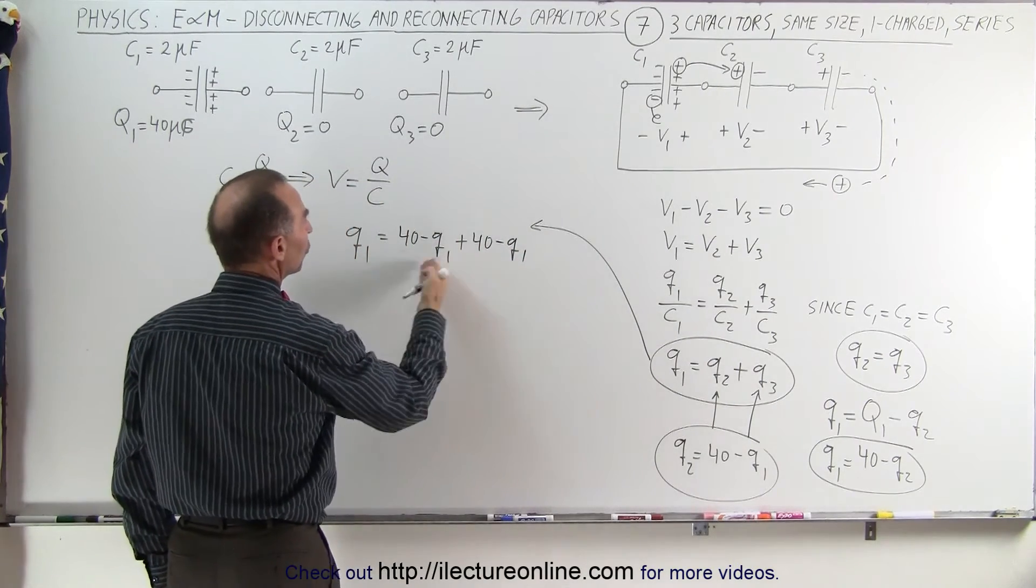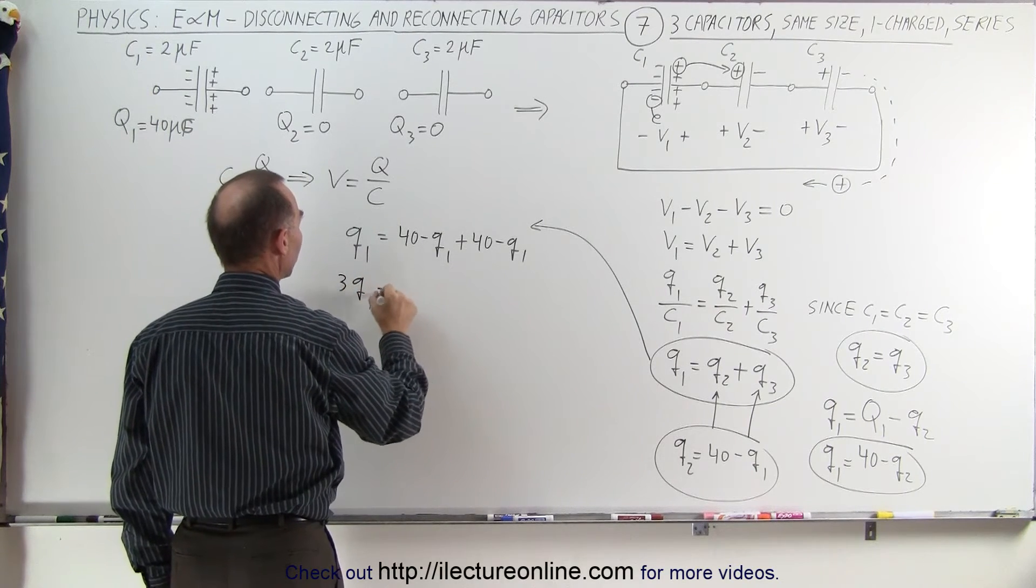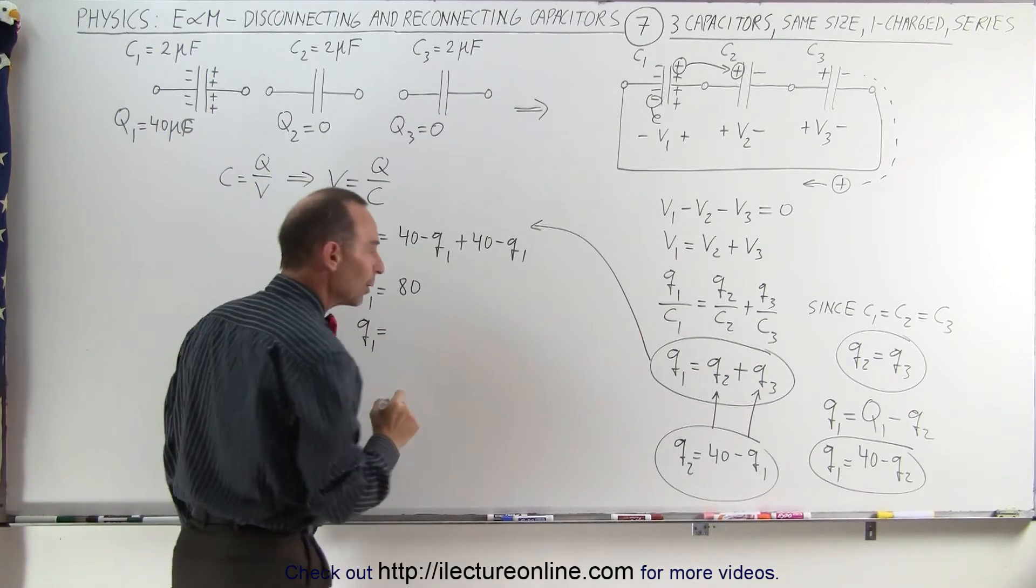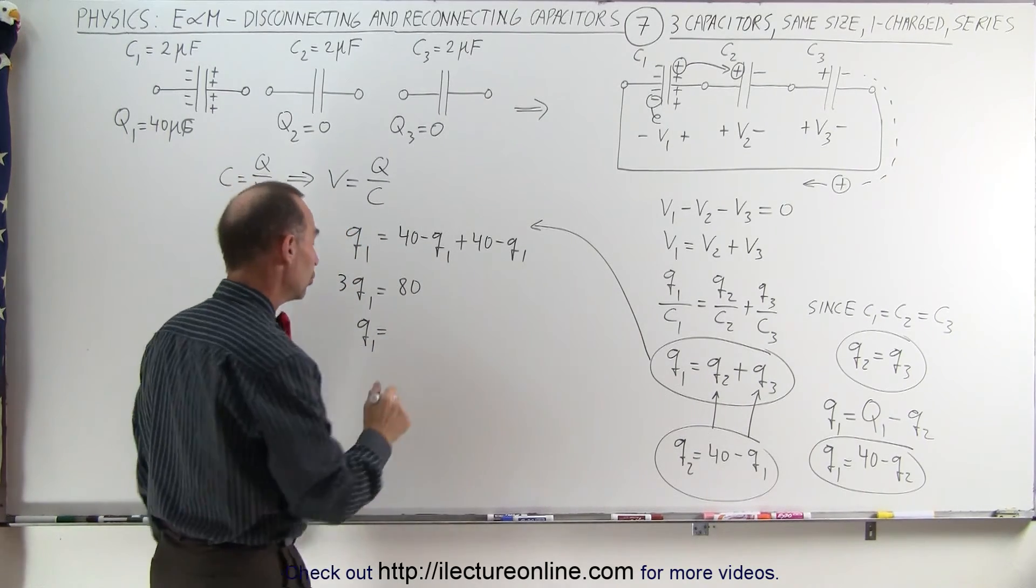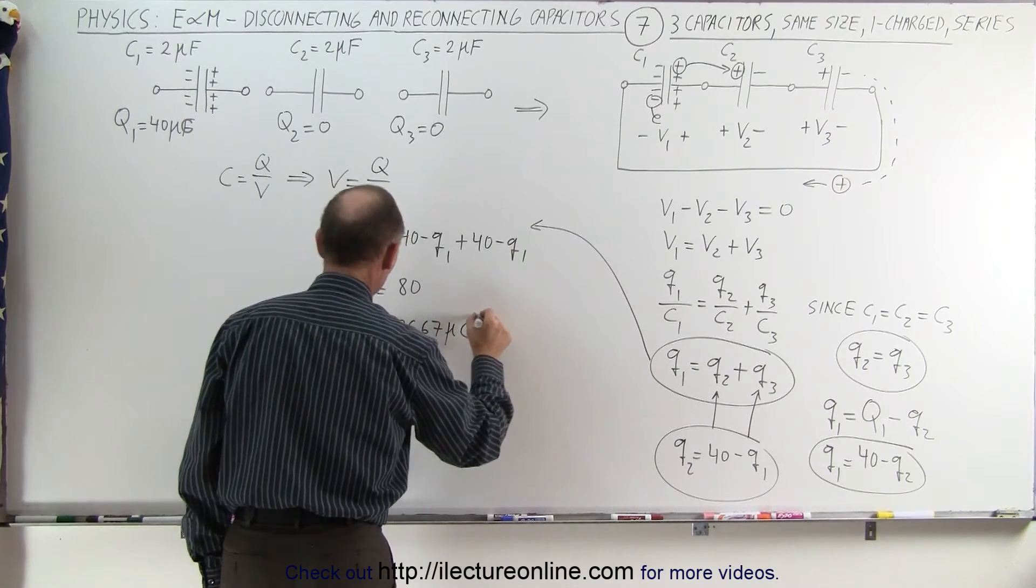I can make these two Q1s move to the other side. That will give me 3Q1 equals 40 plus 40, which is 80. Or Q1 equals 80 divided by 3, which equals 26.67 microcoulombs.